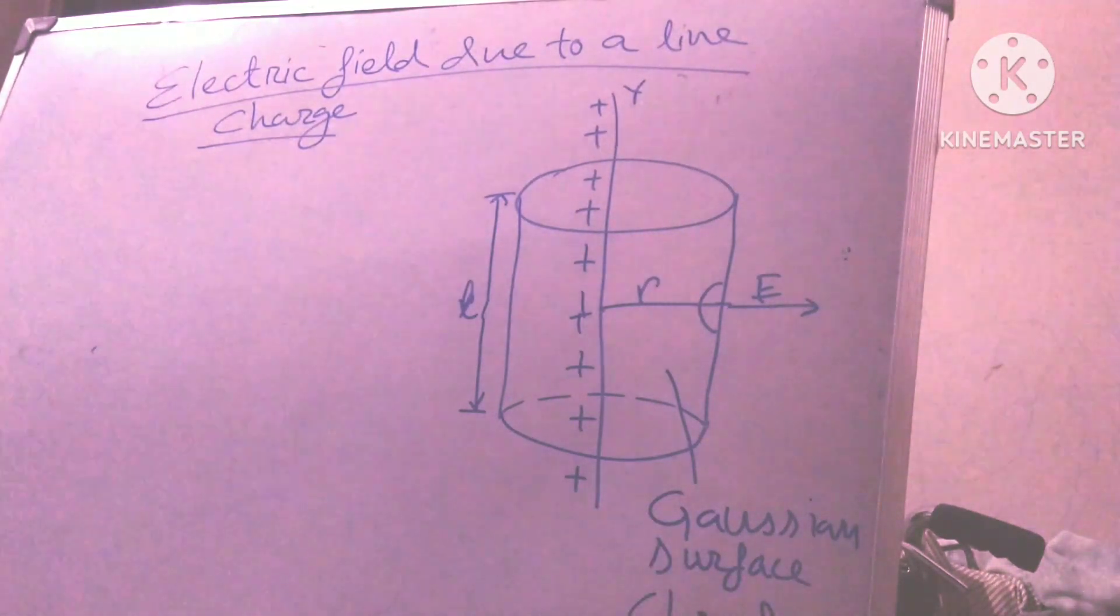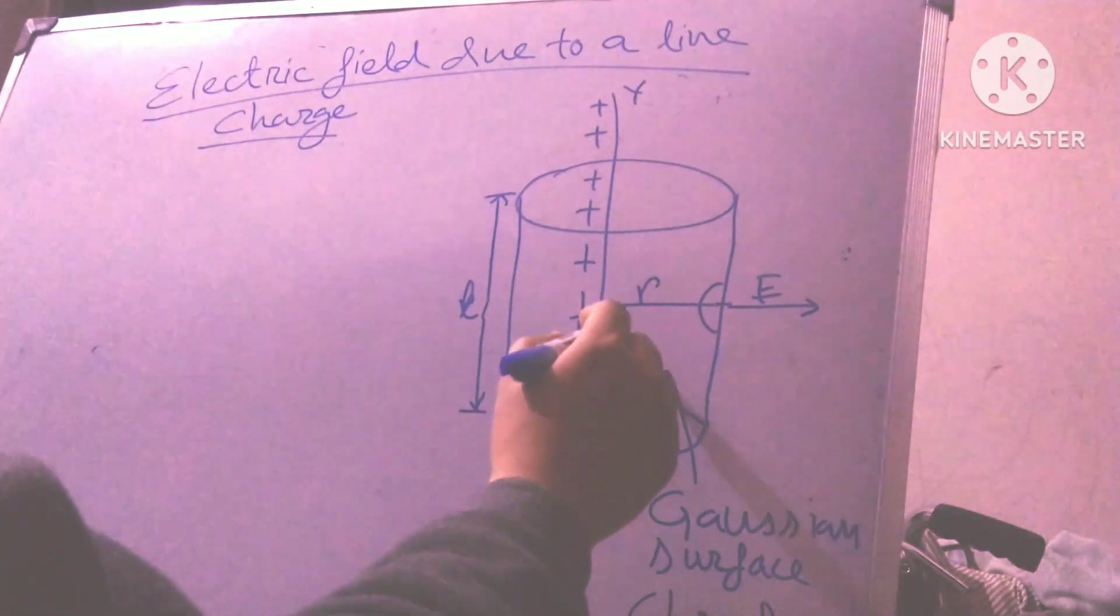Closed surface such that electric field intensity at all points on the surface is same and the electric flux through the surface is along the normal to the surface.